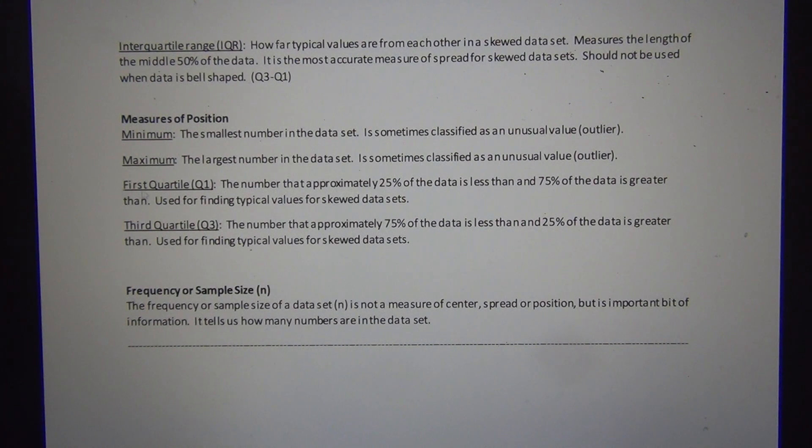We also learned two more measures of position. First quartile, Q1, is the number that approximately 25% of the data is less than.